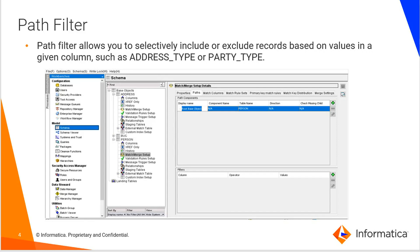Path filter allows you to selectively include or exclude records based on values in a given column, such as address type or party type. Here in this picture, we can see the Paths tab under match and merge settings from where match paths can be defined. It consists of an option called allow missing child, and below we can see that a filter can be applied, which we will see in detail in further slides.